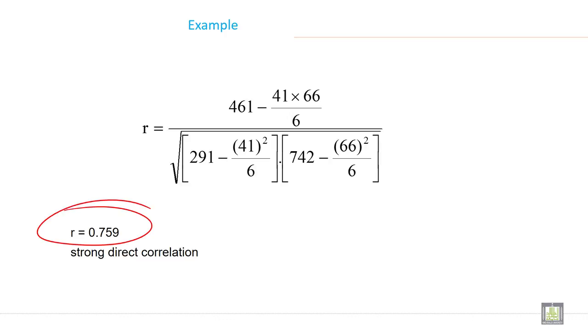When you solve it, you will get r equals 0.759. It indicates that a strong direct correlation between age and weight.